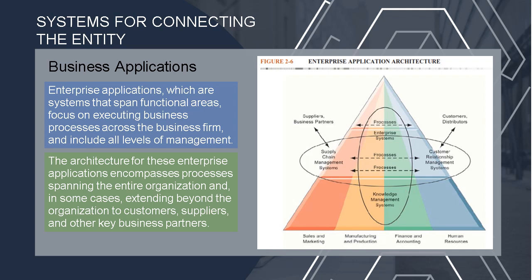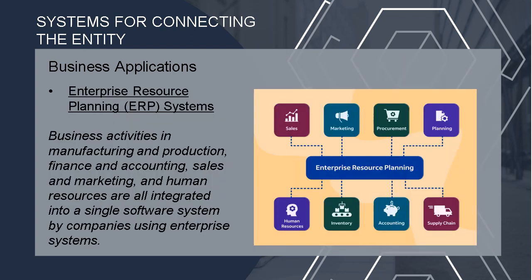Now let's proceed to the system for connecting the entity. It answers questions such as: how does a firm handle all the information across these different types of systems, what is the cost of maintaining many various systems, and how are managers and staff able to coordinate their work across all the many platforms? Enterprise applications are systems that span functional areas, focused on executing business processes across the entire business firm and include all levels of management. The architecture encompasses processes spanning the entire organization and in some cases extending beyond the organization to customers, suppliers, and other key business partners. This includes the enterprise resource planning, or ERP, system.